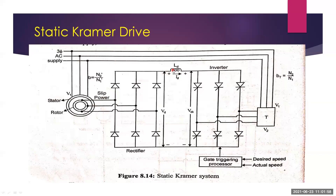The power flow is from the rotor circuit to the supply line. This method is also called a constant torque drive because the supply voltage V1 is constant and torque is proportional to V squared — so if supply voltage is constant, torque is constant. The static Kramer drive has been very popular in large power pump and fan-type drives where the range of speed control is limited to below synchronous speed.